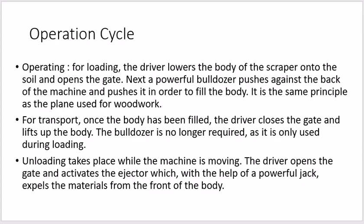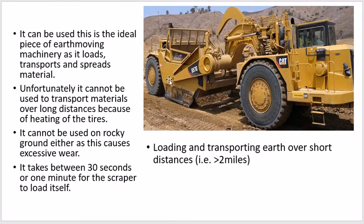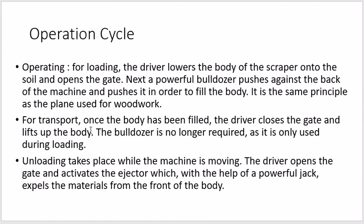The operation cycle is important. For loading, the driver loads the body of the scraper onto the soil and opens the gate — the blade falls down and begins cutting and removing the surface of the earth. A powerful bulldozer pushes from the back of the machine forward in order to fill the body. Once the body has been filled, the driver closes the gate and lifts up the body, and the bulldozer is no longer required.